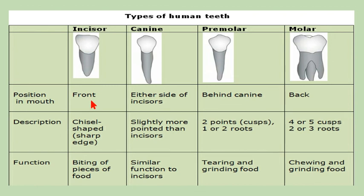Herbivorous animals have prominent incisors because they use them for cutting and biting grass. Canines, on the other hand, are well developed in carnivorous animals, which have long pointed canines for tearing, grasping, and killing prey.